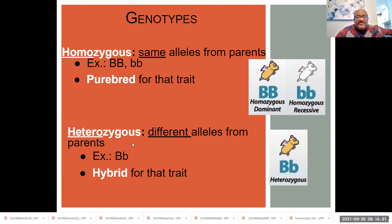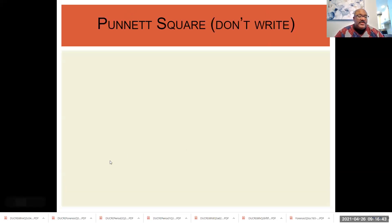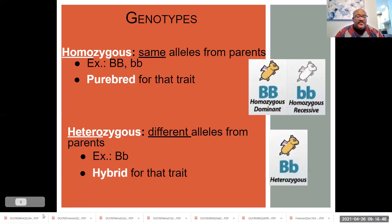If I say heterozygous, it's two different traits. But if I say heterozygous dominant, that means it's heterozygous but dominant for a certain trait. At a minimum, you've got to know homozygous means the same — two of the same traits. Heterozygous means different traits, or it's a hybrid.